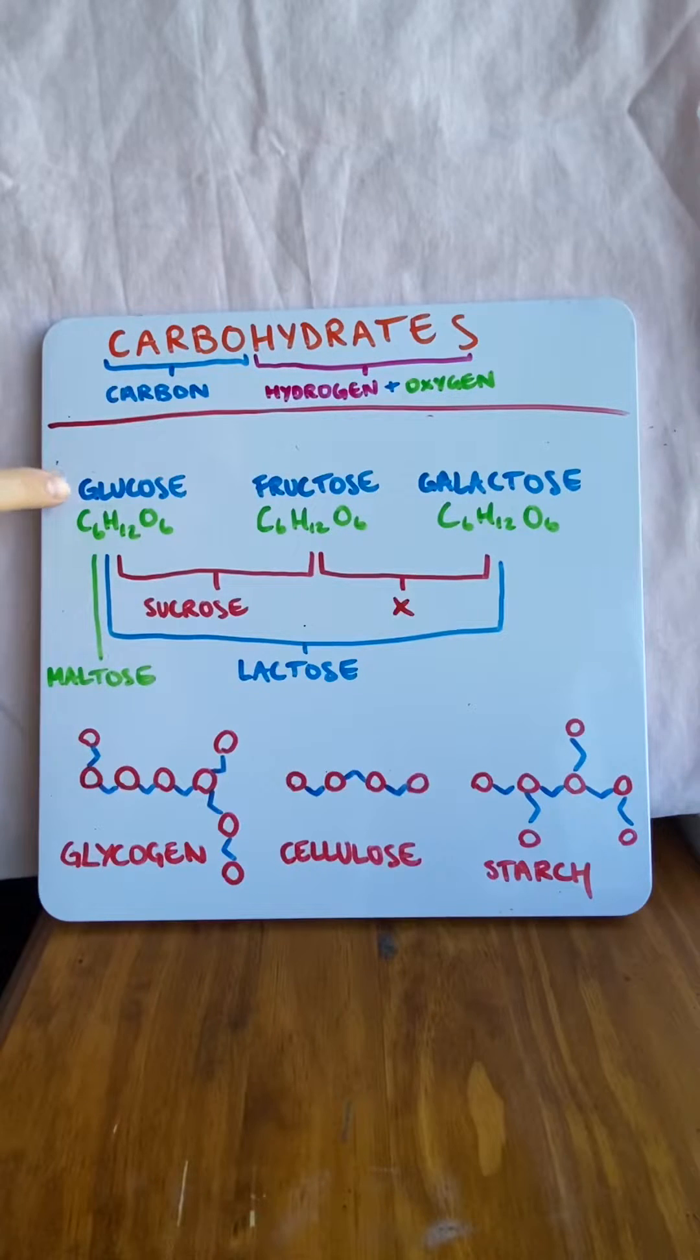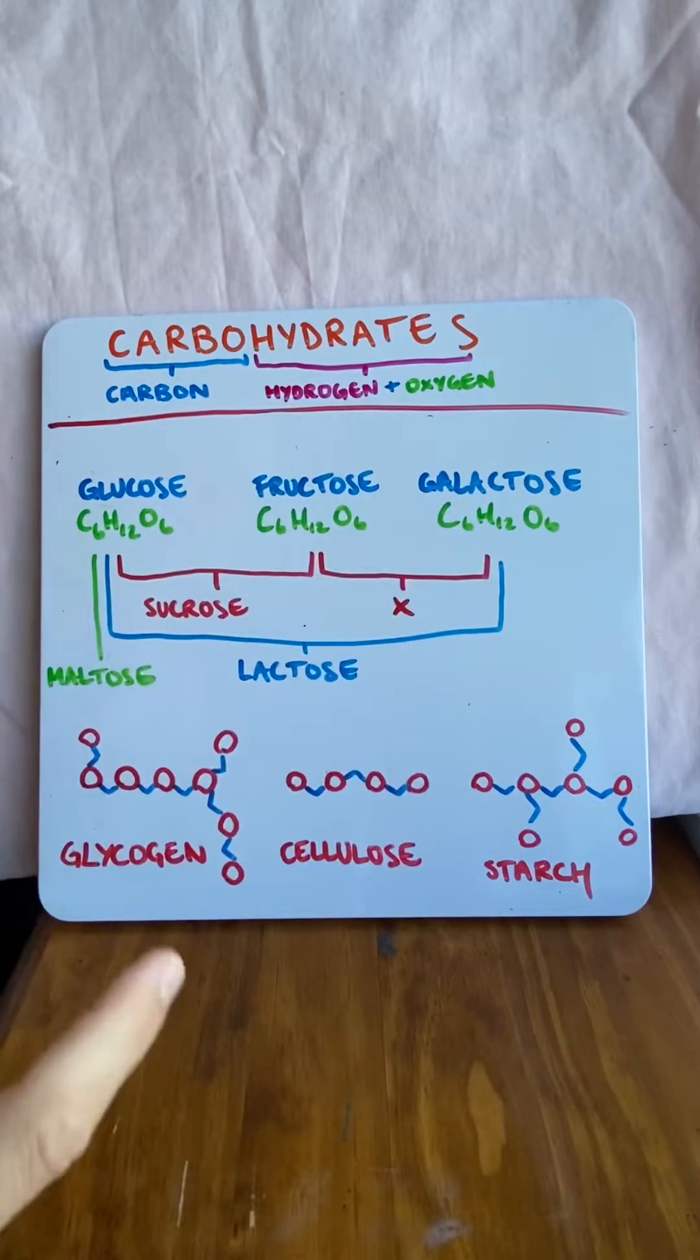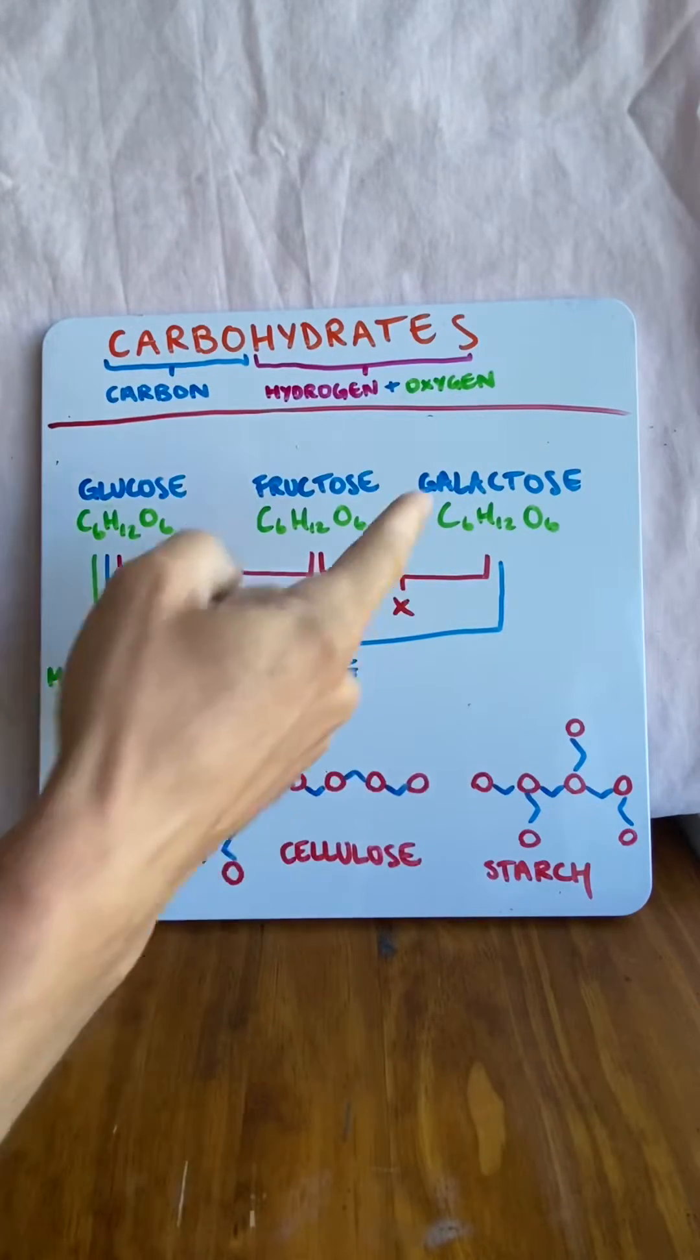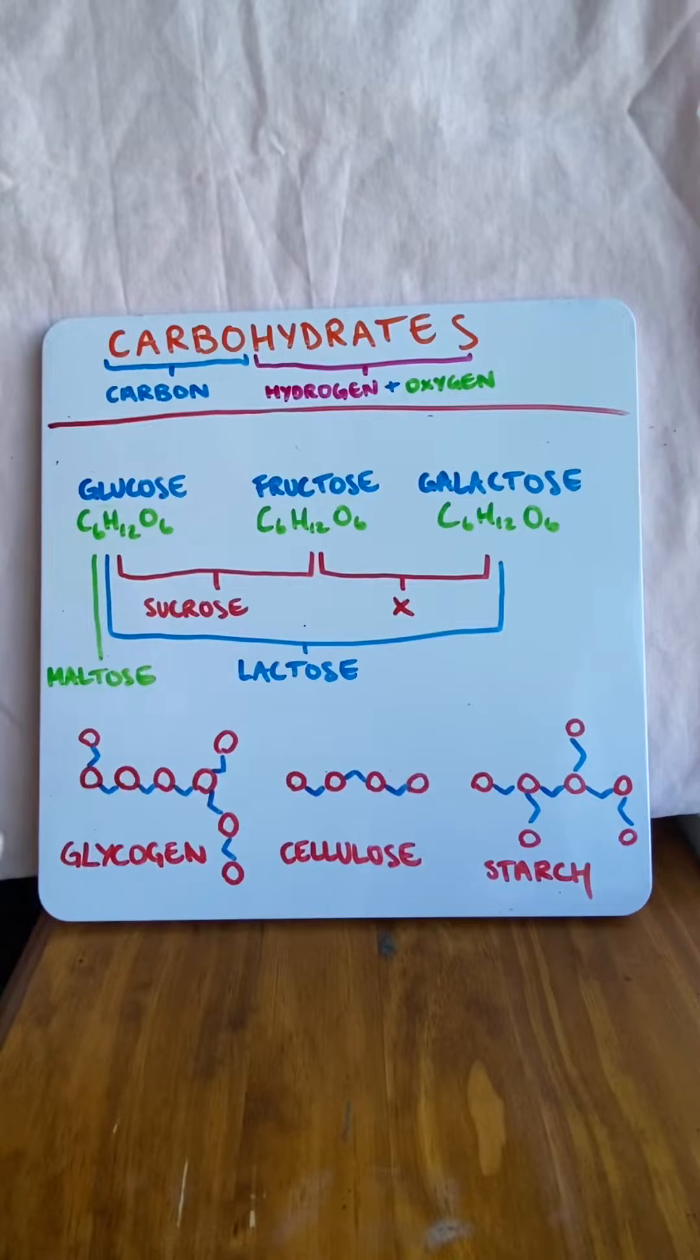The other thing is that we use glucose to form ATP energy through the glycolytic pathway. Fructose and galactose also feed into that glycolytic pathway. So when you ingest fructose and galactose, most of it's going to feed into that glycolytic pathway for energy.